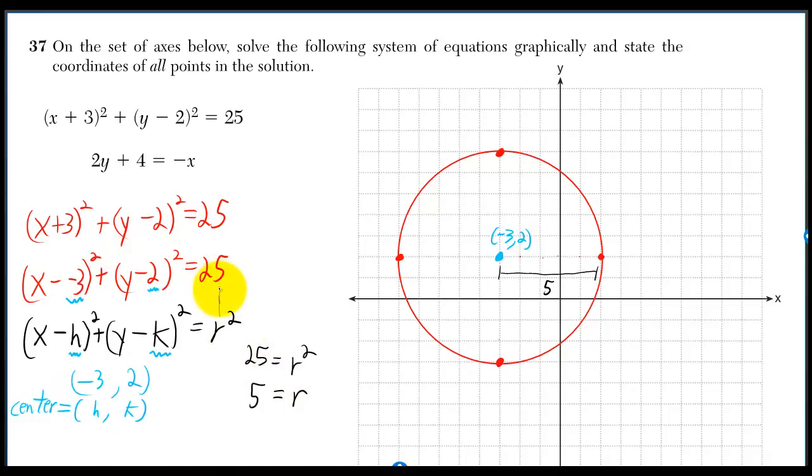So the right side is equal to r squared, so 25 is equal to r squared. If you take the square root of 25, you get r is equal to 5.